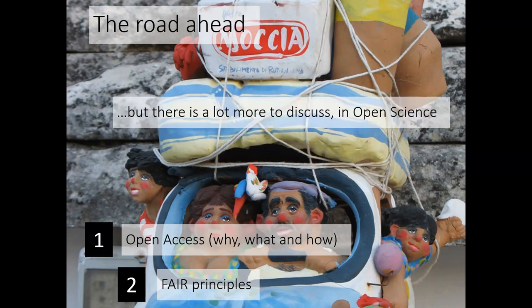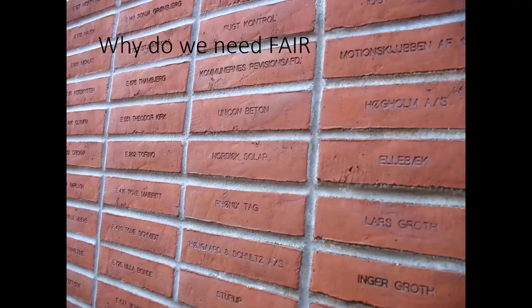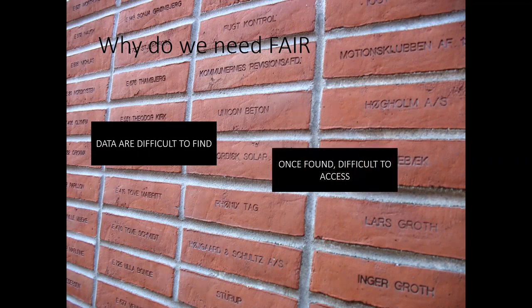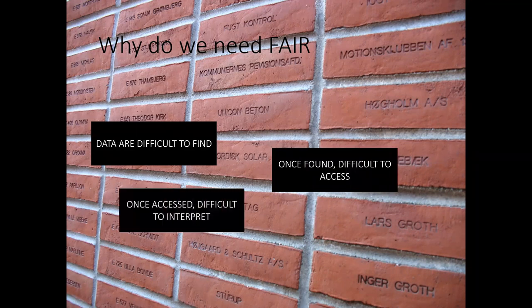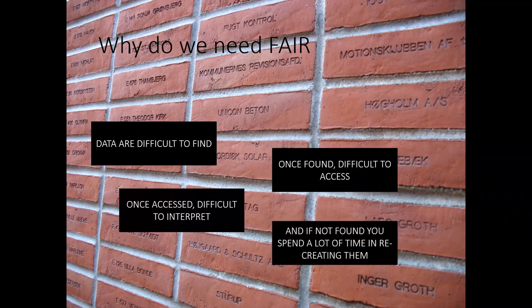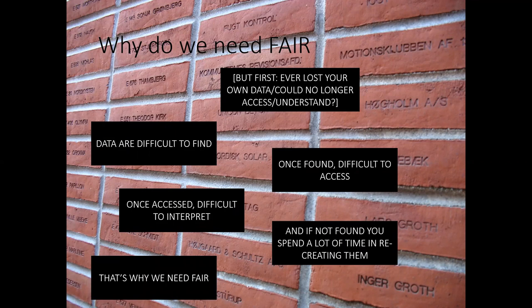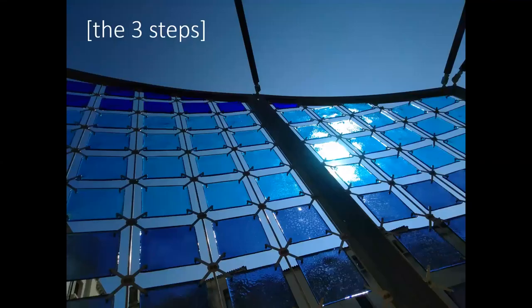These two meetings are just an appetizer, because there is a lot more to discuss in open science. Coming to FAIR — why do we need it? Because data are difficult to find, and once you've found them they might be difficult to access, and once accessed they might be difficult to interpret or understand. If you don't find them, you spend a lot of time and money recreating them. Have you ever lost your own data or could no longer access or understand them?